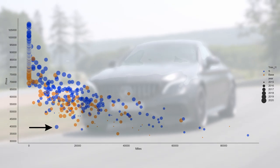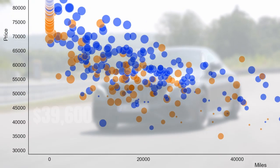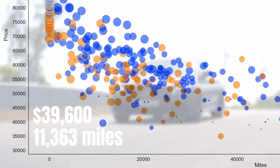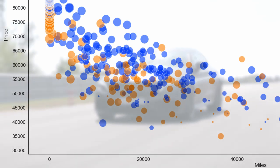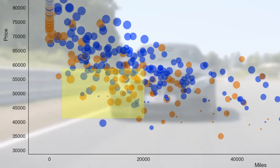And a car which immediately pops out is this 2018 C63 S. This car has a price of $39,600 and a mileage of only 11,363 miles. Now you can see that this is priced far below the rest of the market.